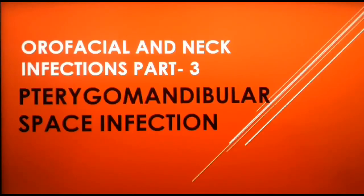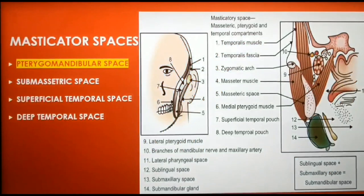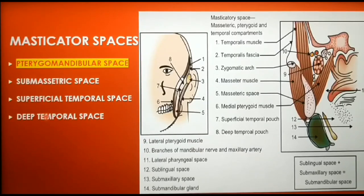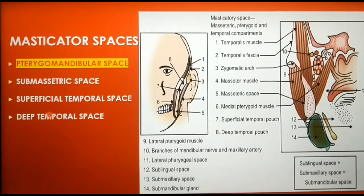Hello everyone, welcome back to OMFS lecture series. The topic for this lecture is pterygomandibular space infection. The pterygomandibular space is a part of the masticator space, which also contains the submasseteric space, superficial temporal space, and deep temporal spaces. All these spaces communicate with each other as well as with other spaces like buccal, submandibular, and parapharyngeal spaces.